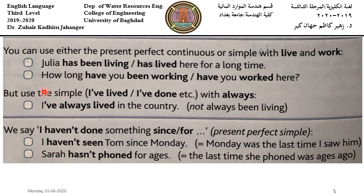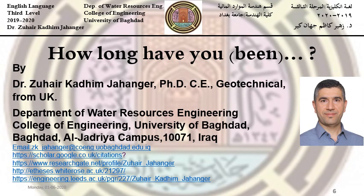However, use the present perfect simple — not continuous — with 'always.' For example: 'I've always lived in the country,' not 'I've always been living.' We also say 'I haven't done something since' using present perfect simple. For example: 'I haven't seen Tom since Monday' equals 'Monday was the last time I saw him.' Or: 'Sarah hasn't phoned for ages' equals 'the last time she phoned was ages ago.' Thank you very much for listening.